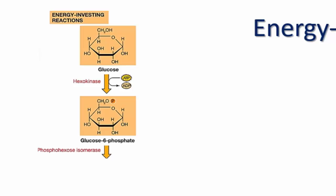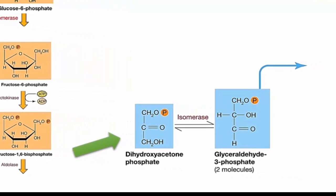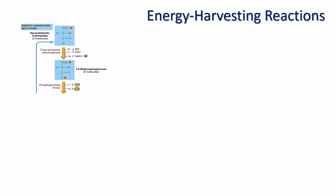In the initial reactions of glycolysis, a glucose molecule is phosphorylated by ATP, converted to fructose, phosphorylated again, then split into two molecules of glyceraldehyde-3-phosphate, or G3P. So the net reaction of the energy-investing stage of glycolysis is: 1 glucose + 2 ATP gives 2 G3P + 2 ADP.